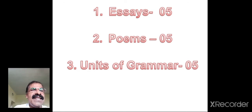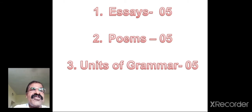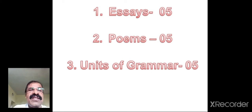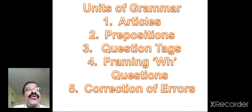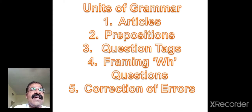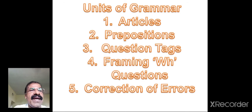There are three sections in your textbook. The first section has got five essays, the second section has got five poems, and in the third section there are five units of grammar. The five units of grammar are articles, prepositions, question tags, framing WH questions, and correction of grammar mistakes or errors.